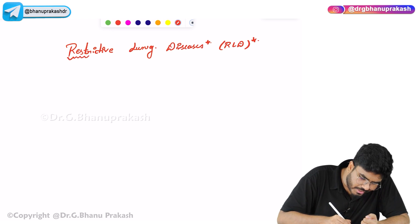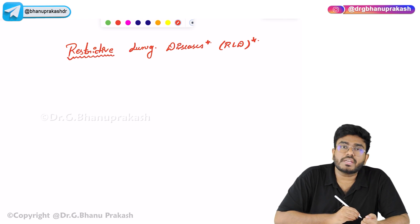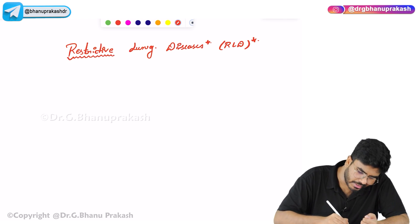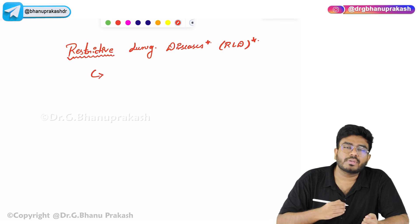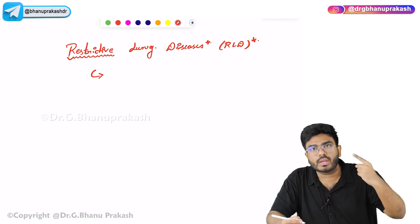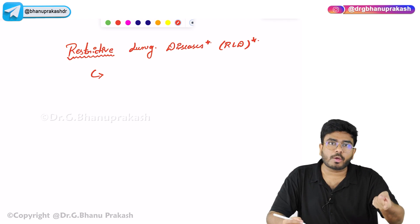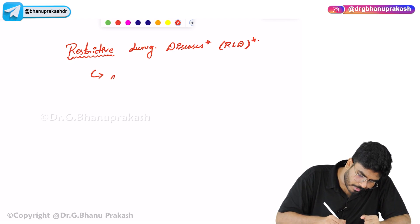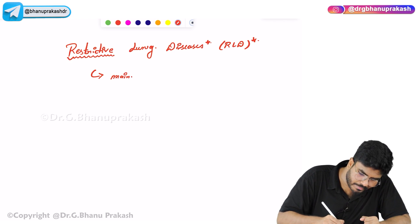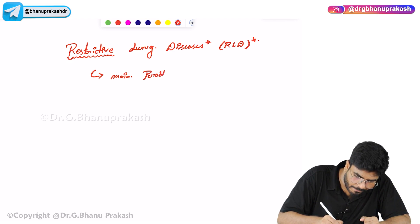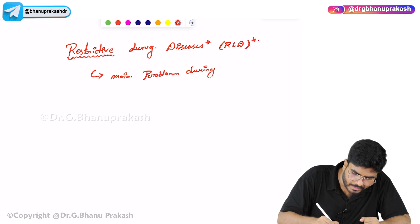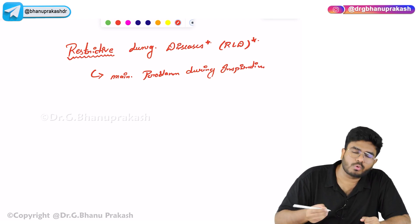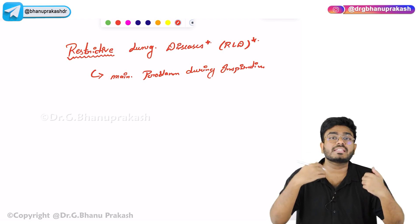In restrictive lung disease, the main problem — the restriction — is for the air intake. So it is an inspiratory problem. In obstructive lung diseases, it's mainly an expiratory problem. Here, it's an inspiratory problem. Less air goes in and less air comes out.